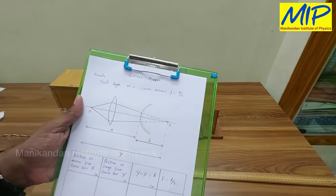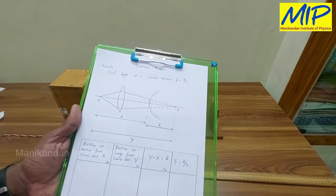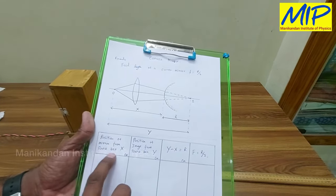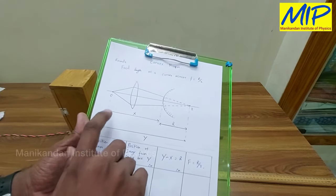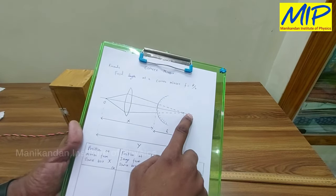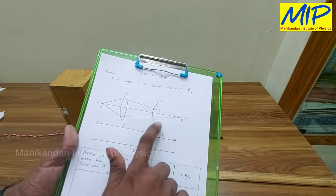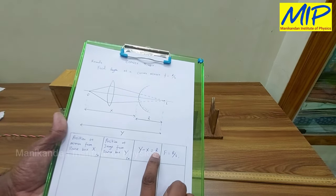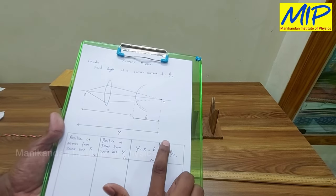I am going to use this formula: the focal length of the given convex mirror f is equal to r by 2. Using this ray diagram I am going to solve this problem. The position of the mirror from the source box is x — that is, the distance from object to the mirror is x. The position of the image from the source box is y, so the distance from object to image is y. If I subtract these two, y minus x, I get my radius of curvature of the given convex mirror. So if I find the radius of curvature, I can find the focal length: f is equal to r by 2.